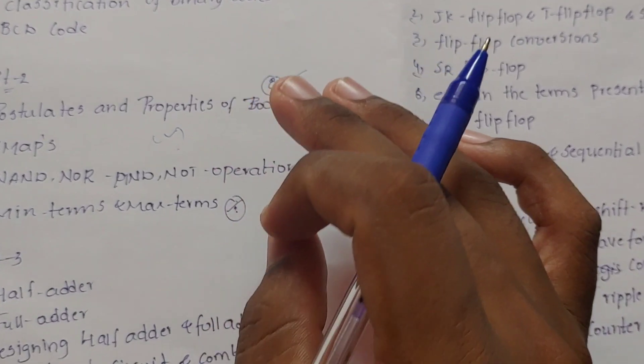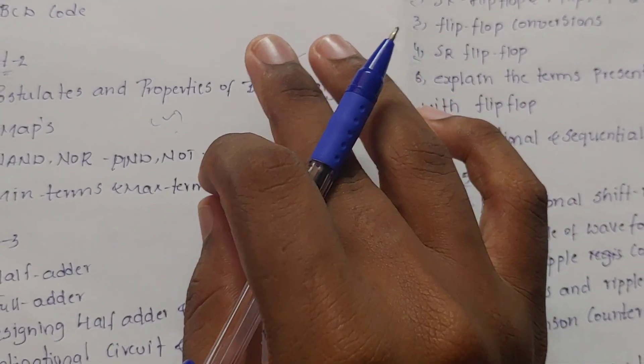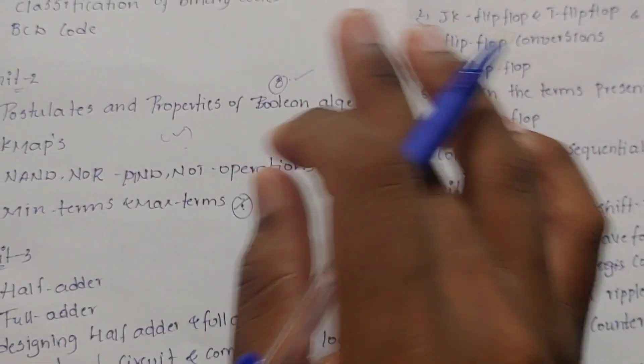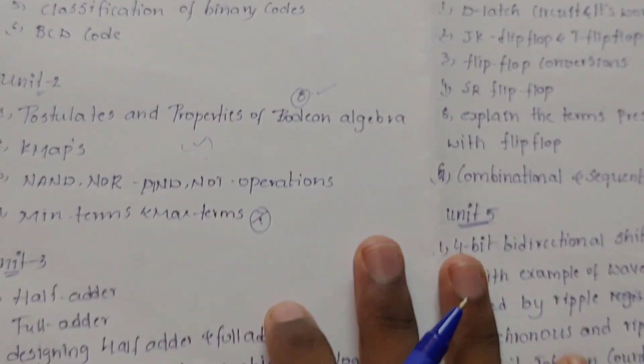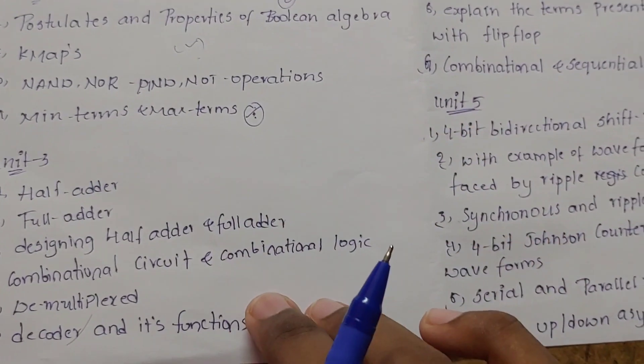This is very important. K-maps, min terms and max terms are very important. You can minimize the time. If you want to see the min terms and max terms, then you can minimize the time.